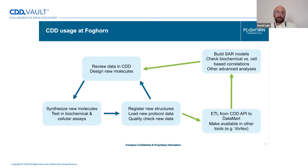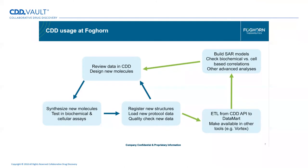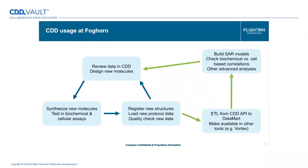An important part of this, indicated by the green arrows off to the side, is we also use an ETL — extract, transform, load — to take data from the CDD API and load it into a data mart Johannes has built in-house. This makes the data available to a lot of other tools, both ones that Johannes has built as well as commercially available tools such as Vortex. Having it in these other tools lets us do a lot of custom analysis that the scientists really like, in tools they're very familiar with. One example is building SAR models; another is checking biochemical versus cell-based assays to see if correlations match.